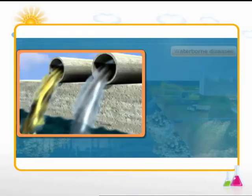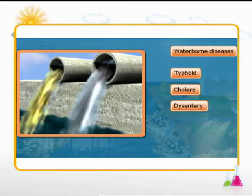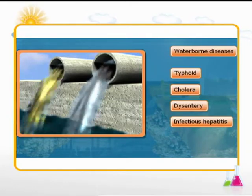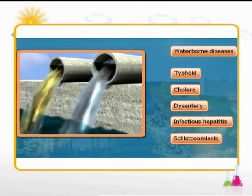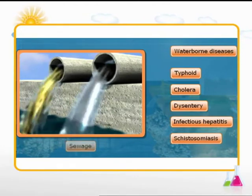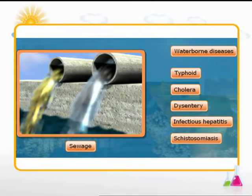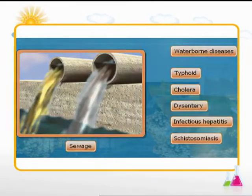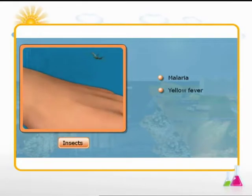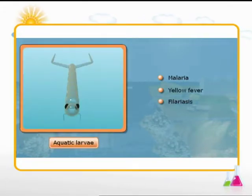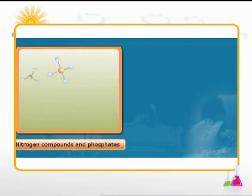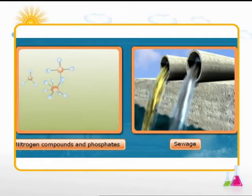Untreated sewage disposal causes major health problems. Typhoid, cholera, dysentery, infectious hepatitis and schistosomiasis are the waterborne diseases that can occur when excreta is allowed to be deposited into water in the form of sewage. Also, malaria, yellow fever and filariasis are transmitted by insects with aquatic larvae.